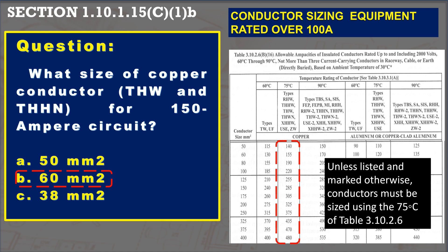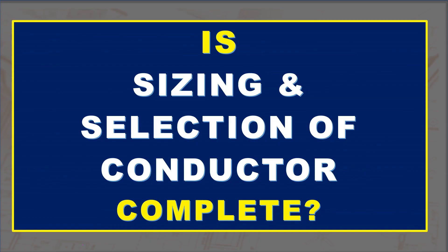Now we understand why the 8 squared millimeter is incorrect for the 50-ampere circuit by considering the temperature limitation stated in Section 1.10.1.15C. At this time, is the sizing and selection of the conductor complete? Not quite — there are still some factors to consider.